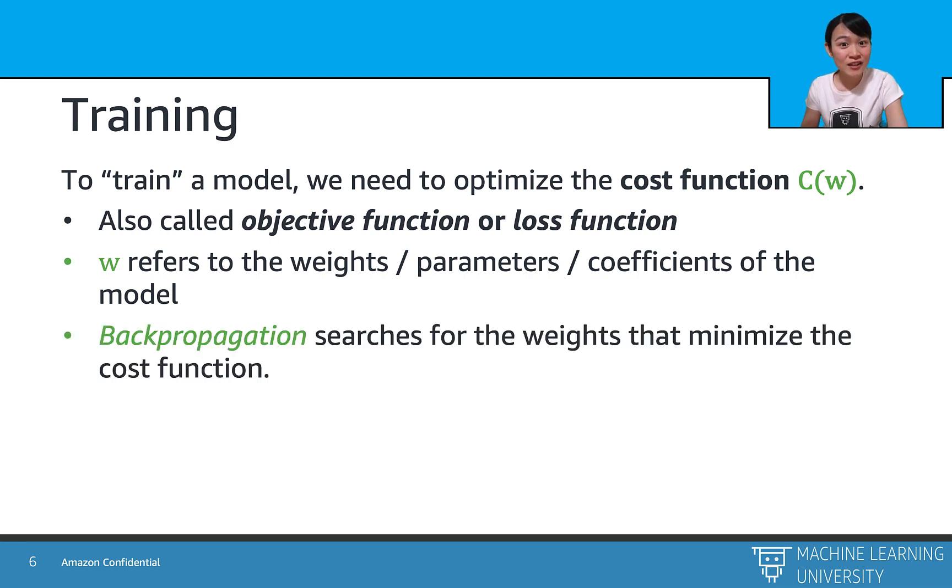To search for the best set of weights to optimize the function, we need to distribute the error from the last layer or the upper layer back to each hidden layer.